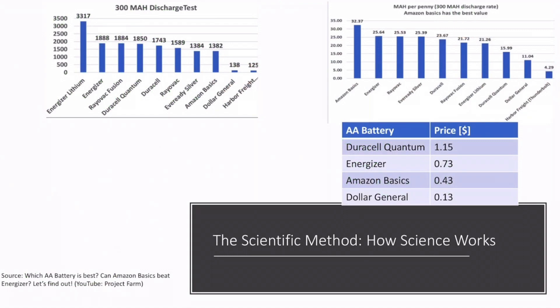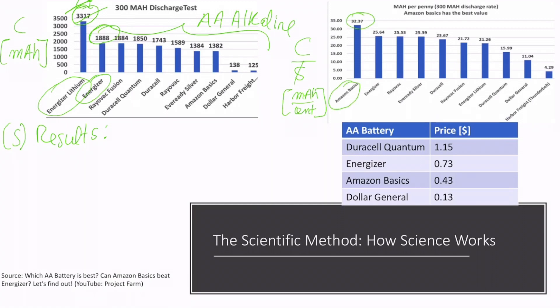Having discharged all the batteries at 300 mA, the next step in the scientific method is to write the results. We can see in the first graph on the left that the capacity values of all the batteries are given in mAh. The highest value here is the Energizer Lithium, but this is a different chemistry, so we'll have to exclude that one. The rest of the batteries are AA alkaline batteries, and these are the ones that we're interested in. The highest value here is given by the Energizer at 1888 mAh. If we take all of these capacity values and divide it by their price, we get values in mAh per cent of a dollar. The highest value here is the Amazon Basics at 32.37 and is followed by the Energizer at 25.64.